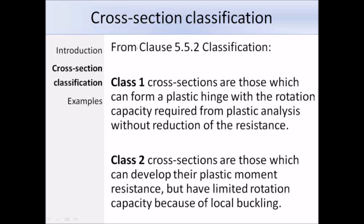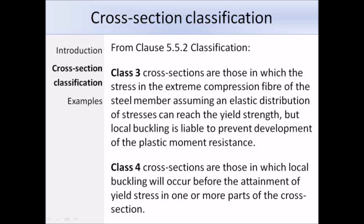These are the definitions taken directly from Eurocode 3 clause 5.5.2. Class 1 cross-sections form a plastic hinge with the rotational capacity required from plastic analysis without reduction of resistance. Class 2 can develop their plastic moment resistance but have limited rotation capacity due to local buckling. Class 3 can reach the yield strength at the extreme compression fibre under elastic stress distribution, but local buckling prevents development of the plastic moment resistance. Class 4 cross-sections experience local buckling before attainment of yield stress in one or more parts.